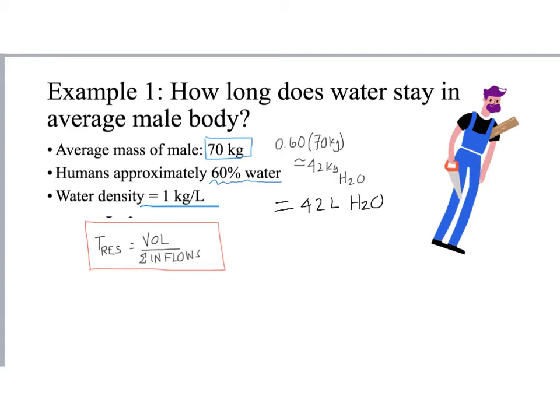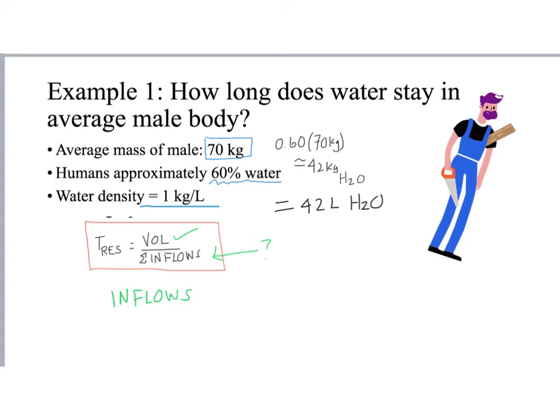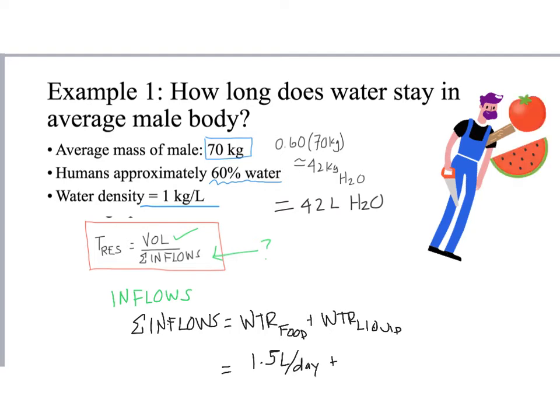All right, so if we come back over here to our equation, we have our volume that's 42 liters of water. Now we have to figure out our inflows. So what is coming in to this man? So our inflows are really going to be the sum of the inflows. If we think about this it's really going to be all the water from all the food plus all the water from all the liquid that this guy drinks. Now everyone's different. Again, we're just going to take an average and we're going to assume that this hipster engineer consumes about one and a half liters per day of water from food and one and a half liters per day of water from liquids.